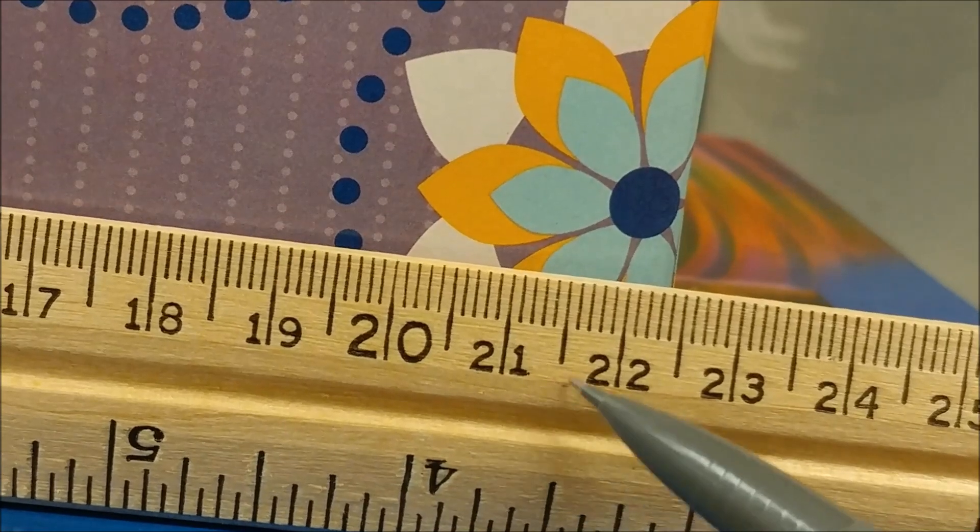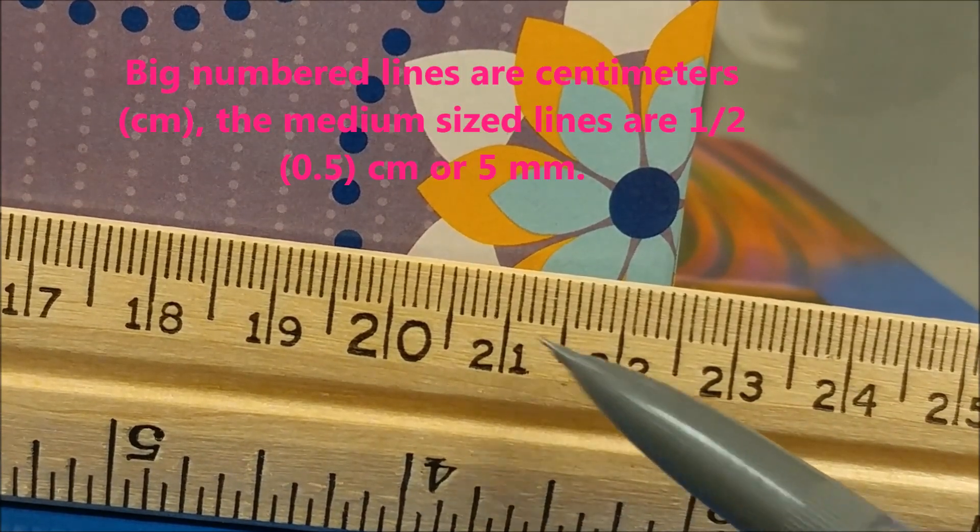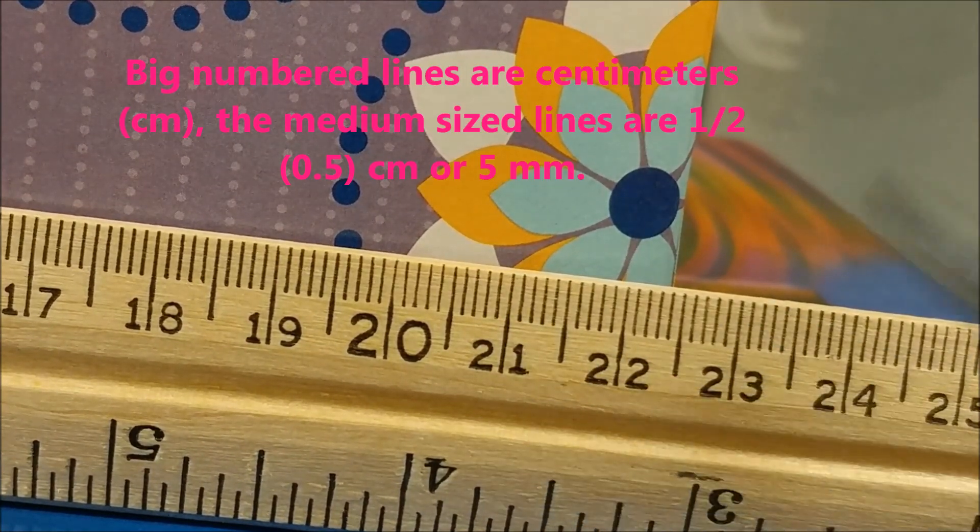Each large line on this ruler is a centimeter, so 21 centimeters, 22 centimeters.